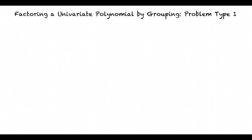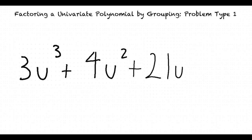What is a univariate polynomial? A univariate polynomial is a set of terms added together where each term consists of a constant numerical coefficient and a single variable such as u raised to various exponents. For example, 3u cubed plus 4u squared plus 21u plus 28.